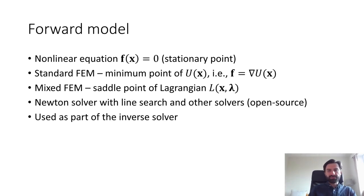I start by presenting the forward model of FEM simulation. This involves solving a nonlinear equation. In the standard form of FEM, this is a minimum point of some discrete energy function. In this paper, I will introduce and use the mixed form of FEM, which solves for a saddle point of a Lagrangian function associated with this energy. I implemented these methods in an open-source FEM simulator written in C++ and Python. It uses mainly a Newton method with line search, but other solvers too, for solving the nonlinear problem.